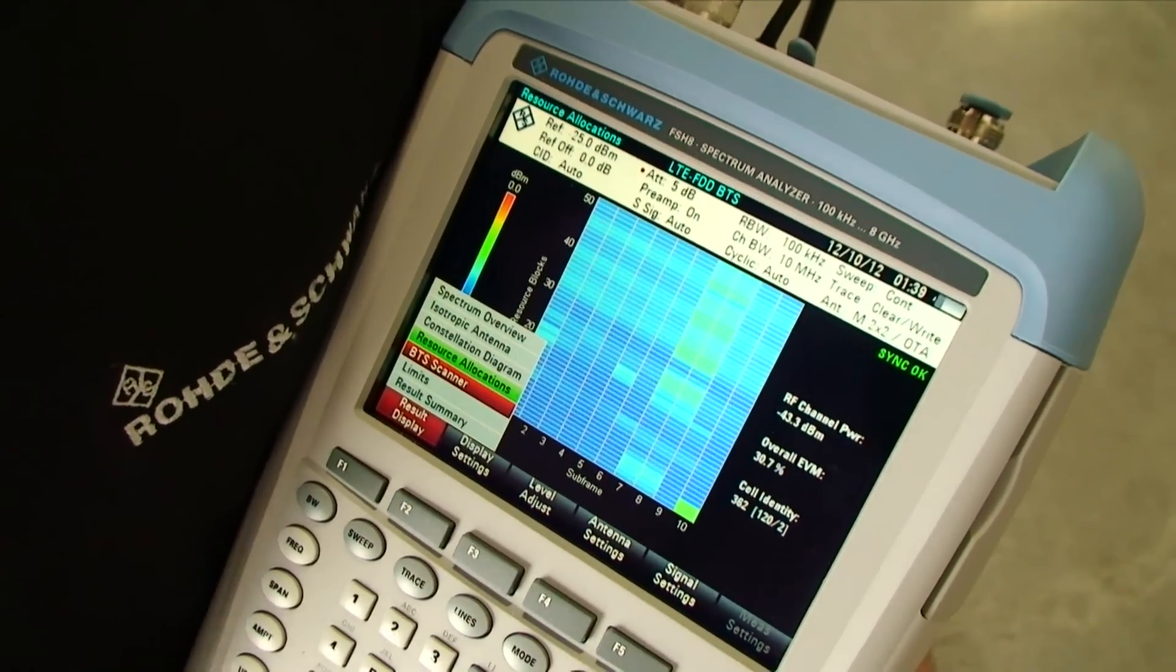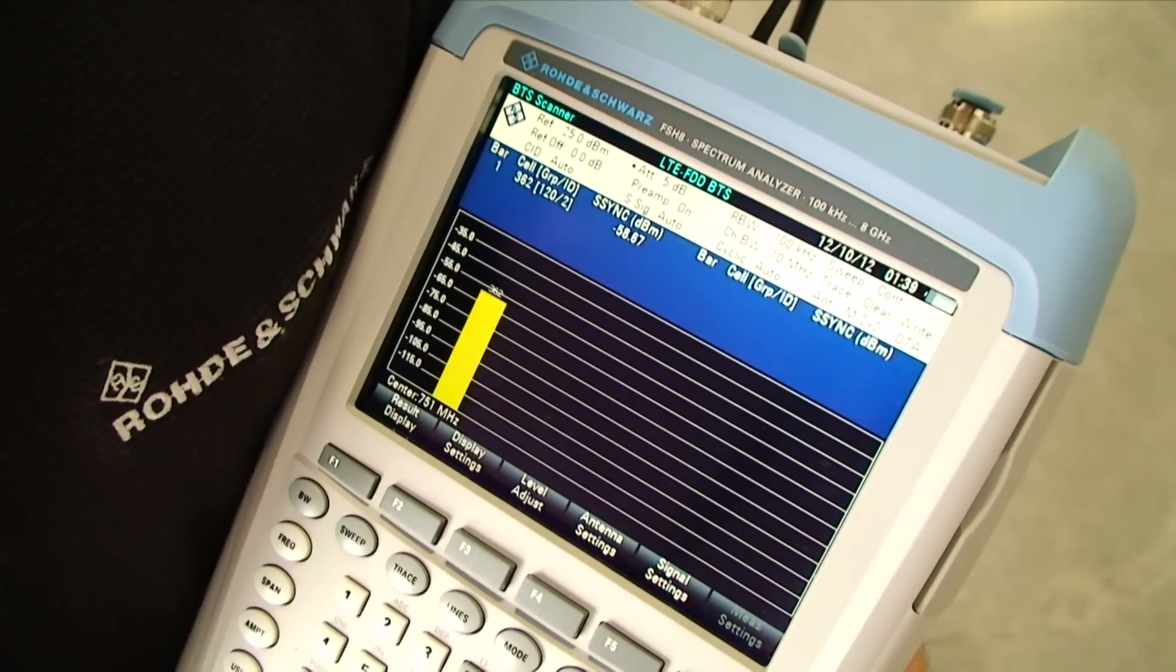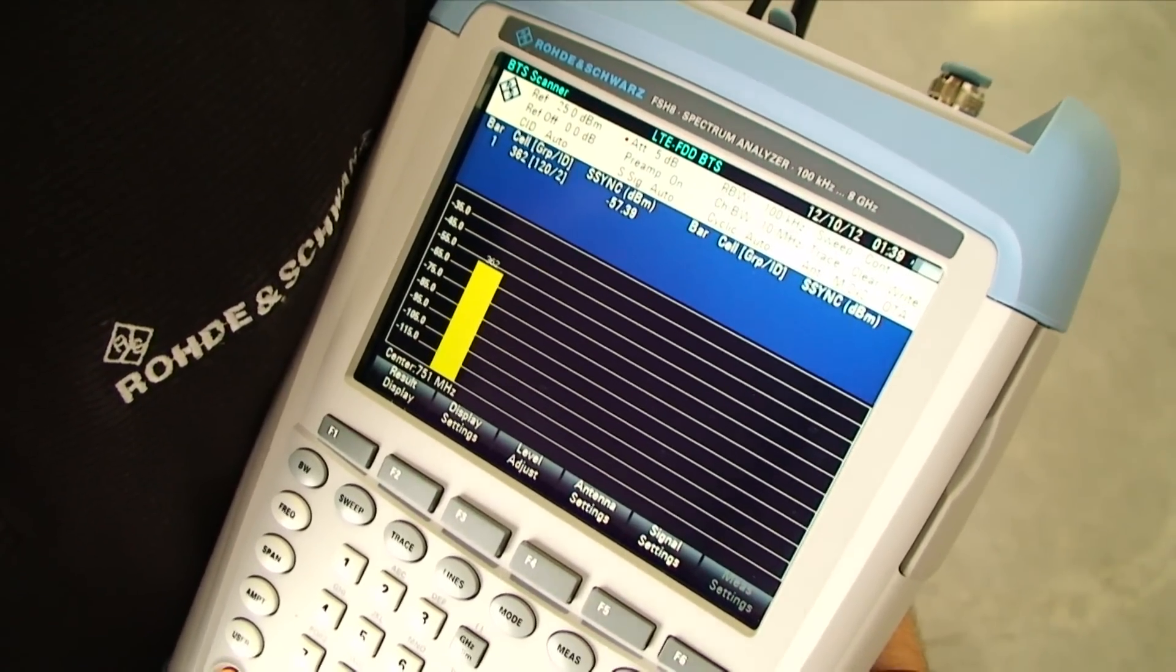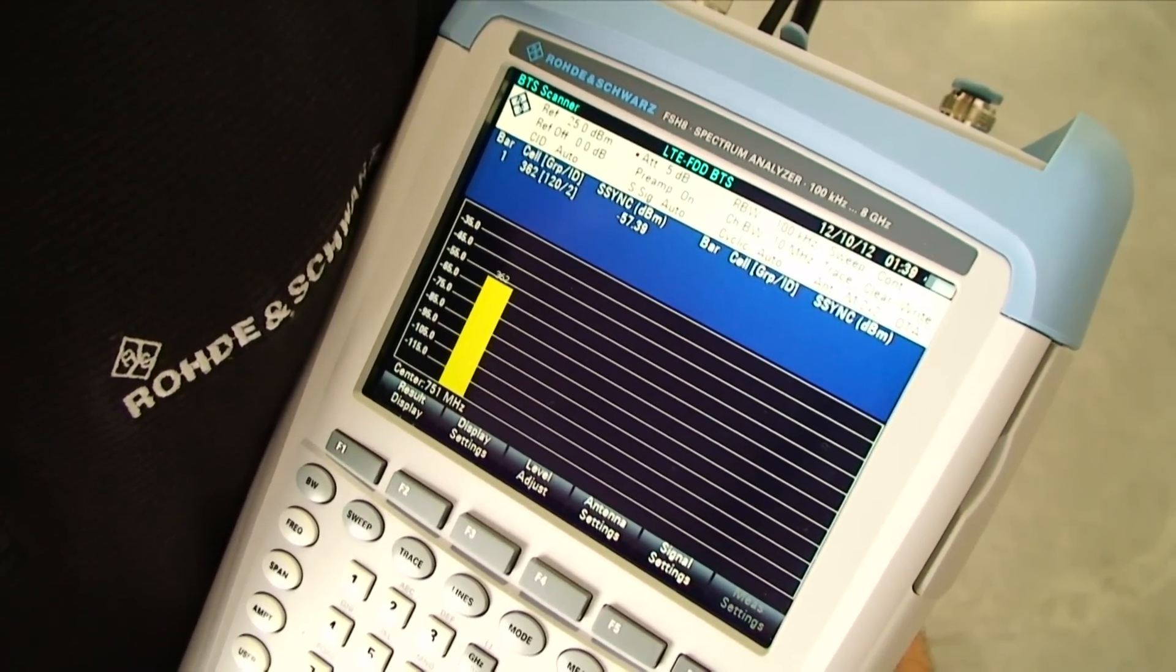Lastly, I'll show you the BTS scanner. In this view, very simple, we just show cell IDs to figure out which towers are in the area and broadcasting LTE.